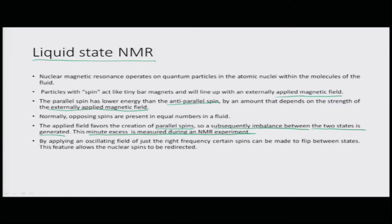The applied external field creates a slight excess of spins aligned favorably relative to those anti-parallel. This minute excess is measured during an NMR experiment. By applying an oscillating field of just the right frequency, certain spins can be made to flip between states, allowing the nuclear spin to be redirected — that is the principle behind NMR.